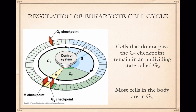Passing the G1 checkpoint means the cell can start replicating its DNA during the S phase. The G2 checkpoint is the point where a cell can be regulated to prevent it from going through the stages of mitosis. The G-sub-1 checkpoint is probably the more important of the two.